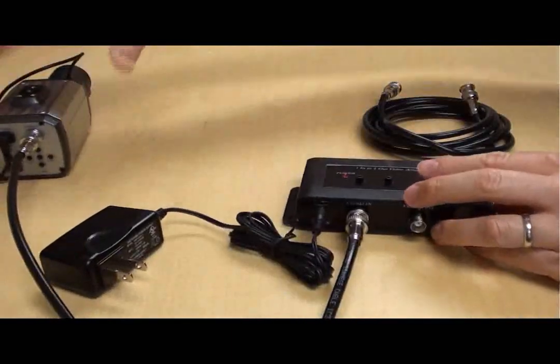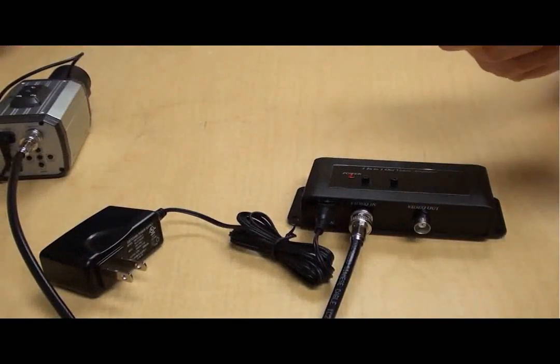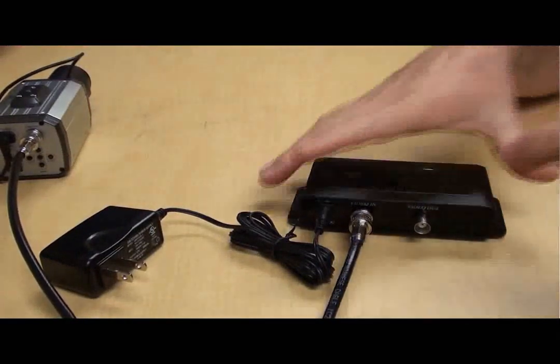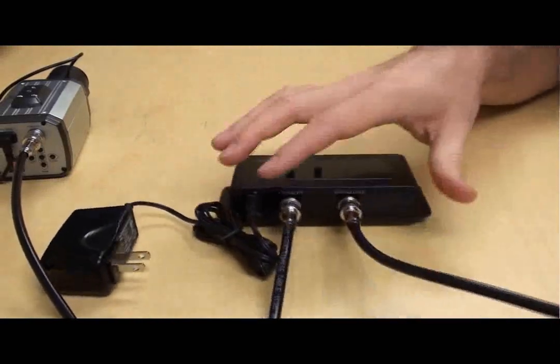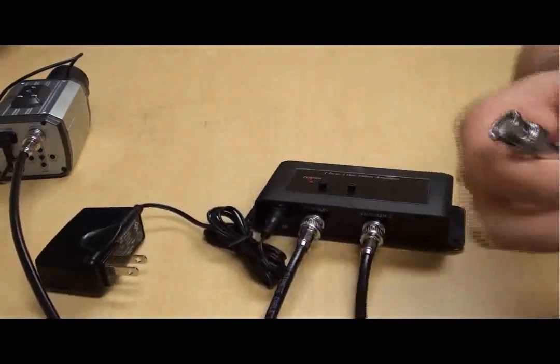A second RG59 cable is connected to the output of the video amplifier. The other end of the cable could be connected to a digital video recorder, VCR, TV, or monitor.